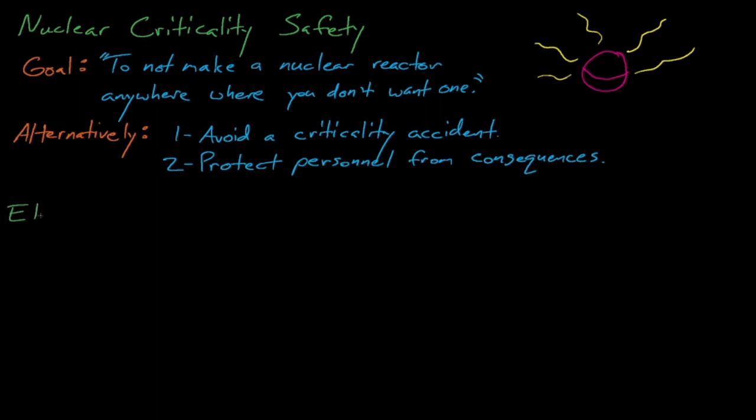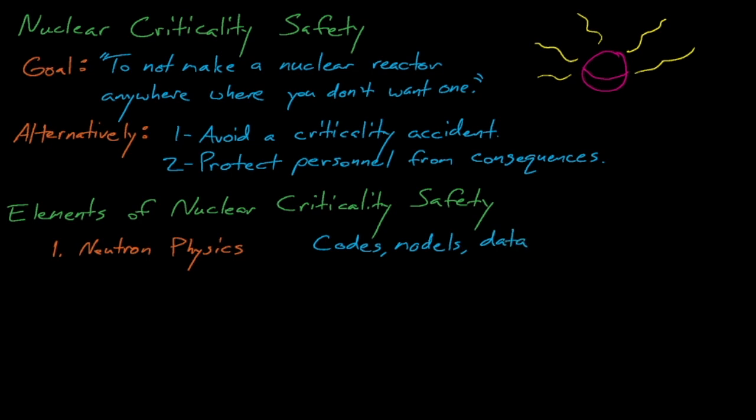So what are the elements of nuclear criticality safety? Well, like most other nuclear engineering fields, nuclear criticality safety relies on having an understanding of neutron and reactor physics, which usually involves codes, computational models, and access to accurate nuclear data.